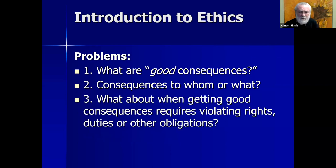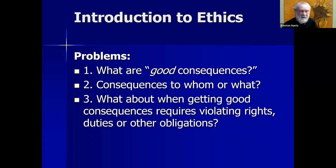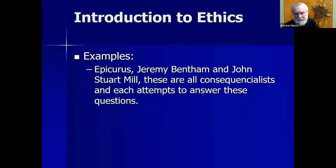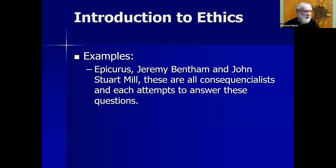What about when getting good consequences requires violating rights, duties, or other obligations? What if I could learn a lot about a disease by secretly infecting people with that disease and watching how it progresses? I might develop a cure, getting good consequences, but it seems terribly unjust — I'm violating the autonomy of those individuals, violating their rights. We're going to see that consequentialism doesn't actually play nice with deontology. In terms of consequentialist philosophers, we'll be looking at Epicurus, an ancient Greek hedonist, then Jeremy Bentham and John Stuart Mill, both writing in the 18th century.